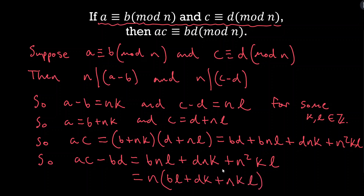B·L plus D·K plus N·K·L is an integer since integers are closed under multiplication and addition. So we've written A·C minus B·D equals N times an integer, which means N divides A·C minus B·D, which means A·C is congruent to B·D mod N. Hopefully you enjoyed thinking through these proofs — they're good introductory examples that highlight the important strategy of looking at the conclusion and unpacking it. Leave any comments or questions below, like the video, subscribe, and keep flexing those brain muscles. See y'all later.